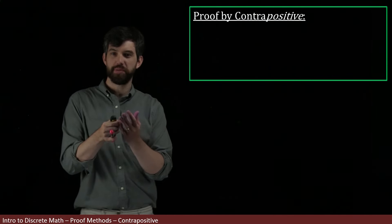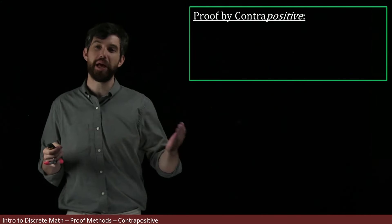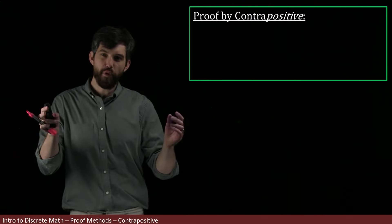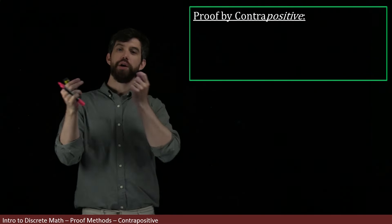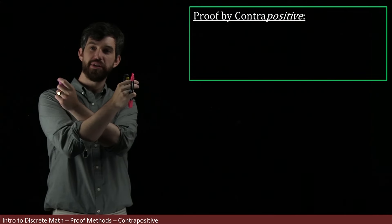If you recall when we talked about a normal implication P implies Q, we've seen before that P implies Q is logically equivalent to not Q implies not P.